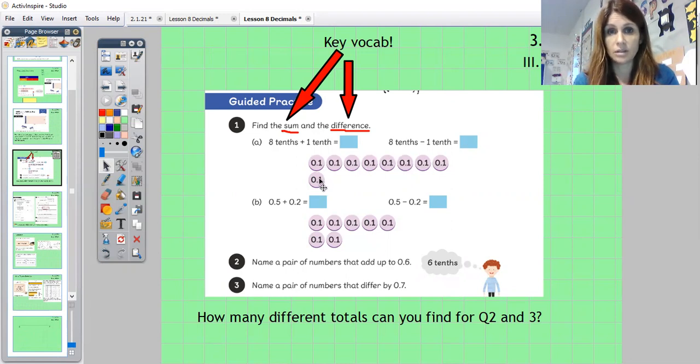The guided practice does use counters to help you, so you can use those counters. It's also shown you in words and in numbers, so we're trying to really look at all the different ways that we can see these numbers. Questions two and three, it doesn't say it in the book, but I would really like you to see how many different totals you can find. So it says name a pair of numbers that add up to 0.6 - how many totals are there? There's not that many, so I think that's a little challenge you can do. And then number three, name a pair of numbers that differ by 0.7. This one there's a lot, so you wouldn't need to give me all of them, but see if you can give me a range.